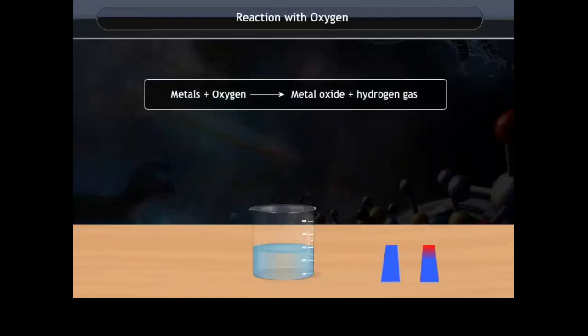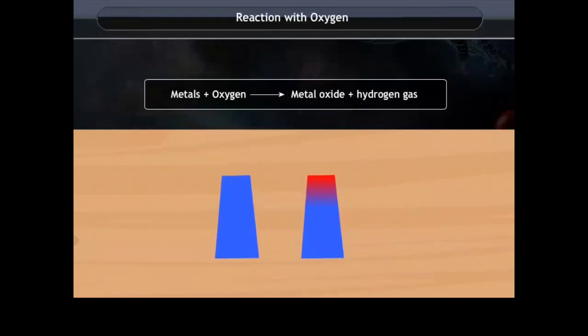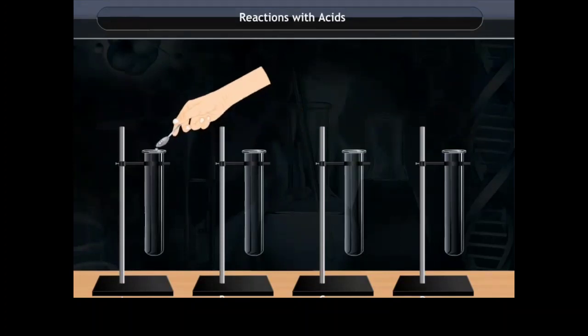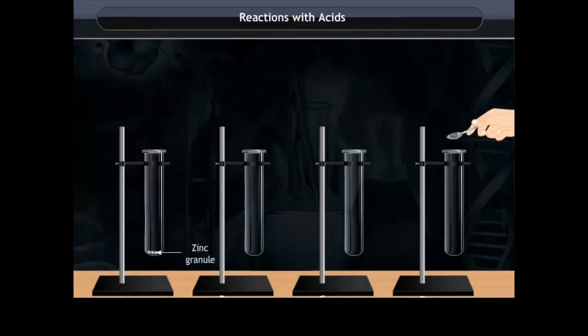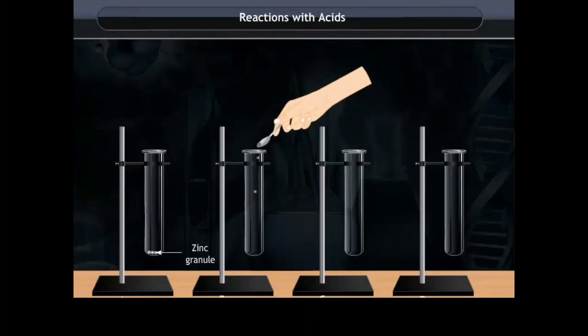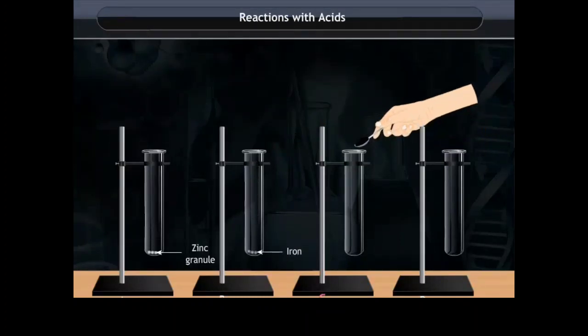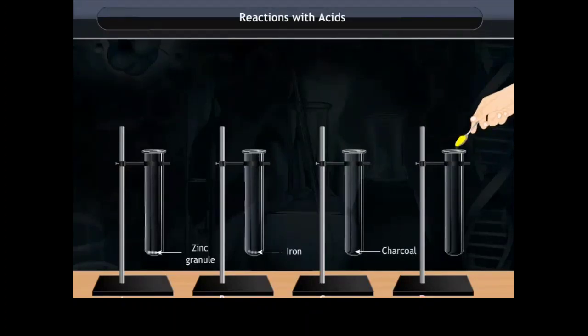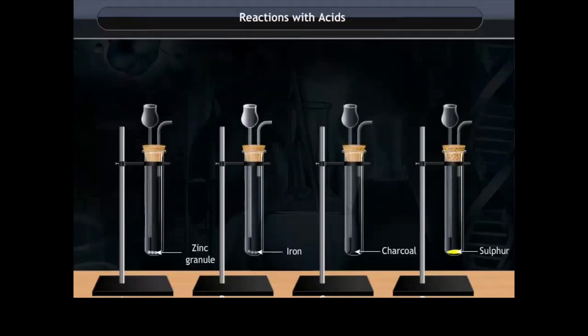Reactions with acids: Take four boiling tubes and label them A, B, C, D. Put a small piece of zinc granule into tube A, iron in tube B, charcoal in tube C, and sulfur in tube D respectively.